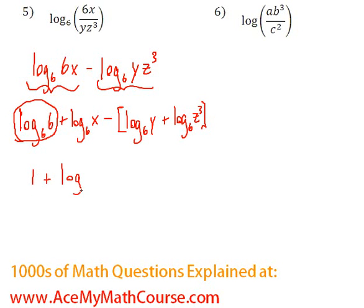So we still have 1 plus log base 6 of x minus. Now the negative will distribute to both logs, so we're gonna get minus log base 6 of y minus log base 6 of z cubed.